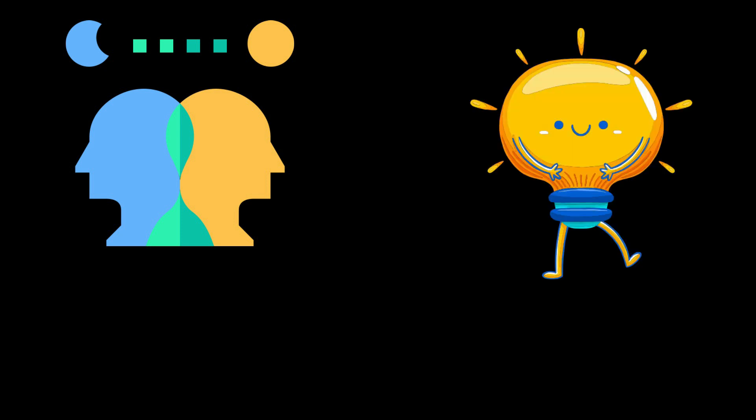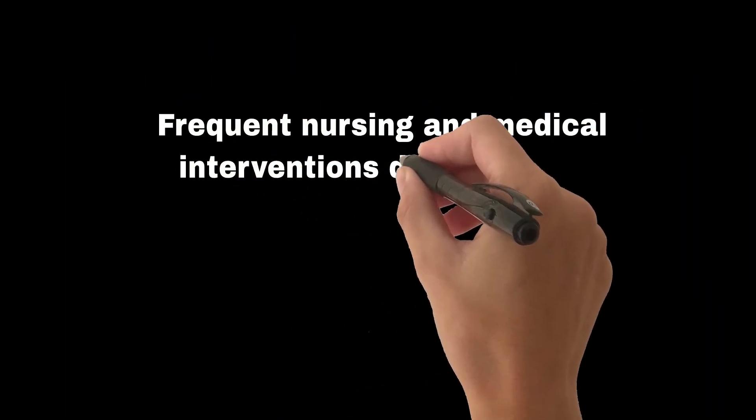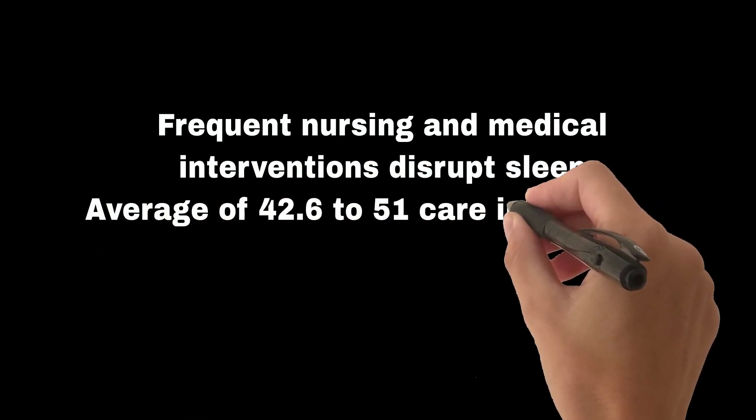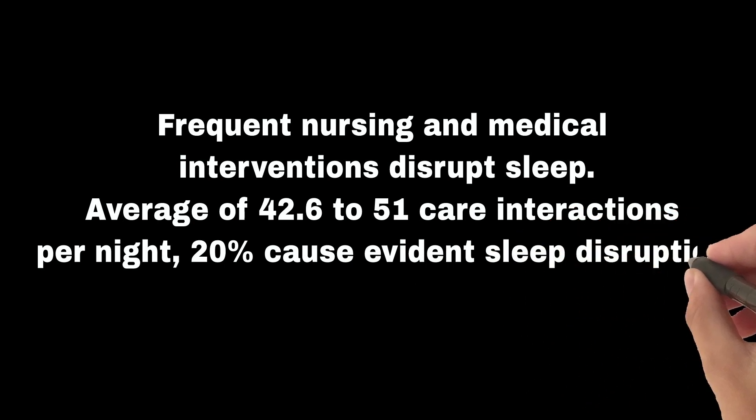Environmental factors include loss of diurnal variation and circadian entrainment, ambient light variations, and noise levels that often exceed WHO guidelines, all contributing to poor sleep. Patient care-related factors include frequent nursing and medical interventions, averaging 42.6 to 51 care interactions per night, with 20% causing evident sleep disruption.